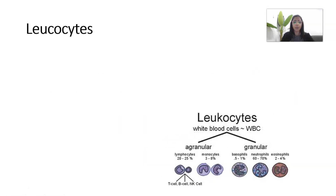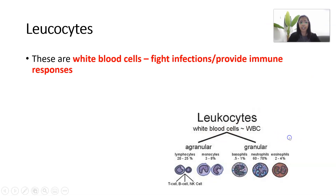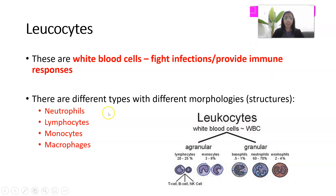The next type of blood cell is leukocytes — the umbrella term for white blood cells. They play a very important role in fighting infections and providing an immune response. Different types include neutrophils, lymphocytes, monocytes, and macrophages. For now, you need to know they can be grouped as granular or agranular. Granular leukocytes, such as neutrophils, have granules in their cytoplasm. Agranular leukocytes, including monocytes and lymphocytes, do not have granules.